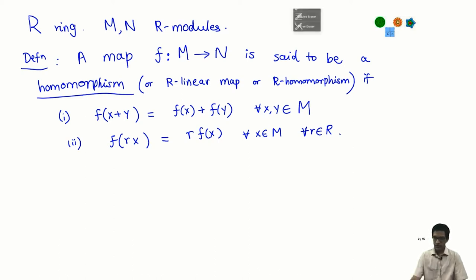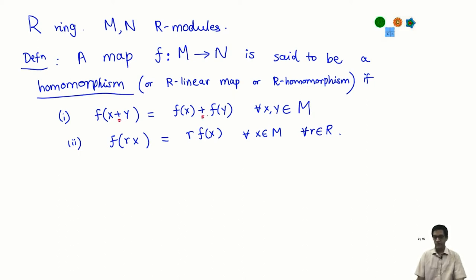If you look carefully at this definition, notice that the plus on the left side of property one is addition in M, and the plus on the right is addition in N. Similarly, the scalar multiplication r · X uses the scalar multiplication of M on the left, and the right-hand side uses scalar multiplication in N.